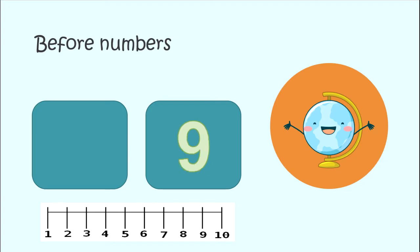Now let's look at another number — 9. What number comes before 9? What number is in front of 9? Let's look at 9 on our number line. Who is in front of 9? 8! Yes, 8 is in front of, or before, 9. And if we check — do we count 8, 9? Yes, that would be right. When we count 1, 2, 3, 4, 5, 6, 7, 8, 9, then 10. Good.